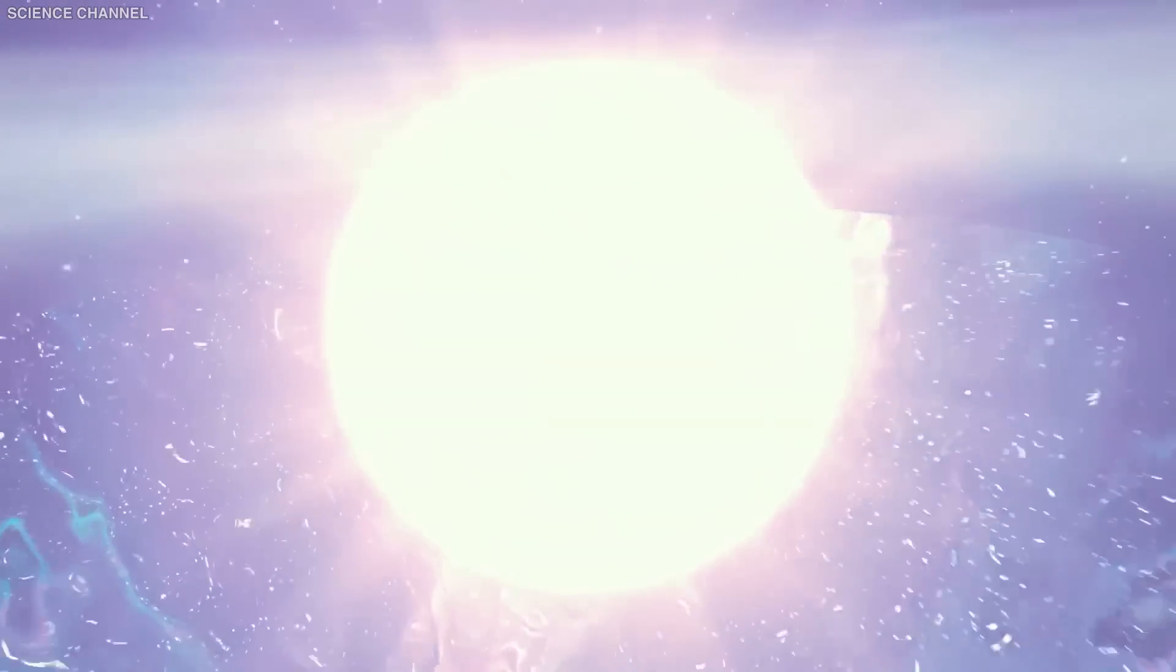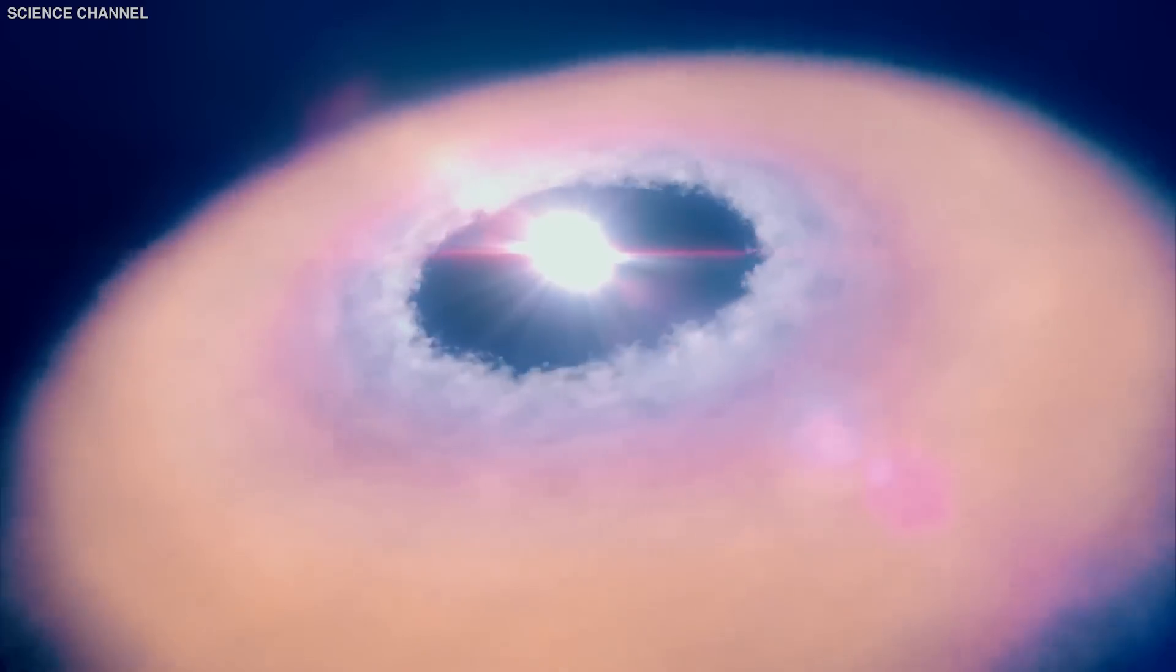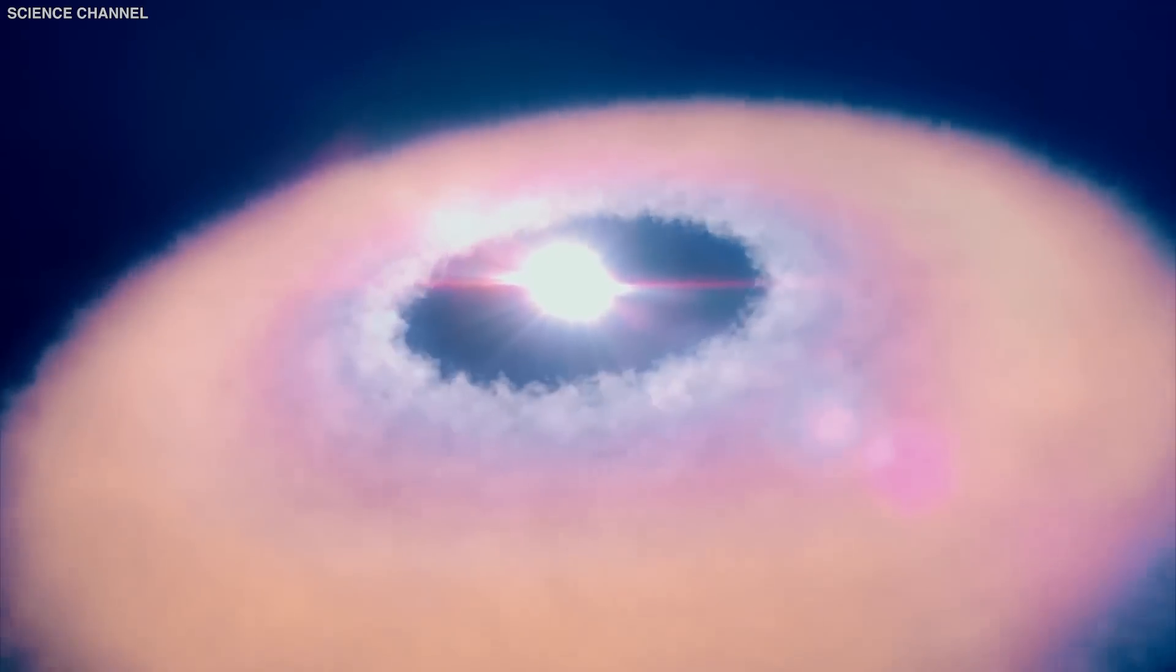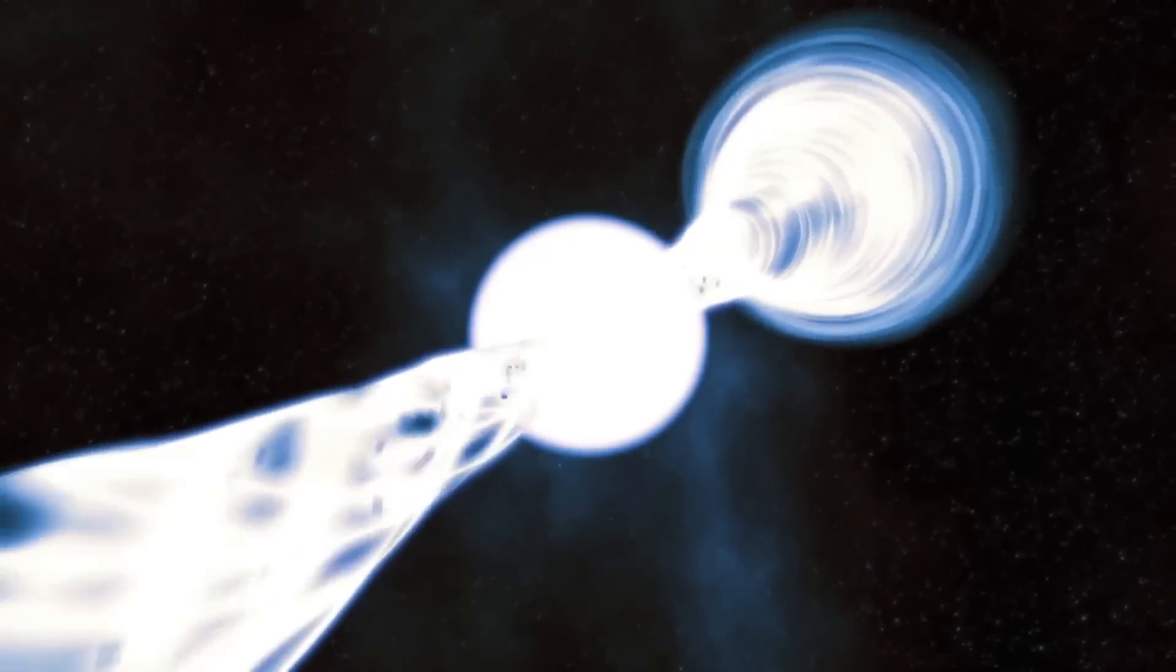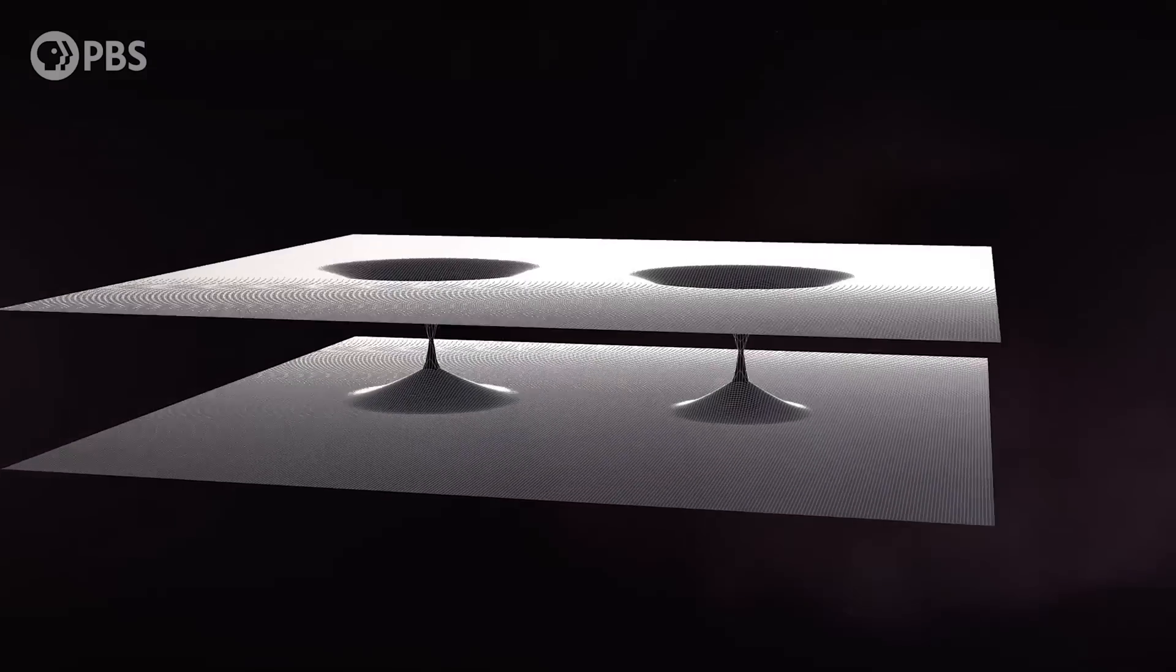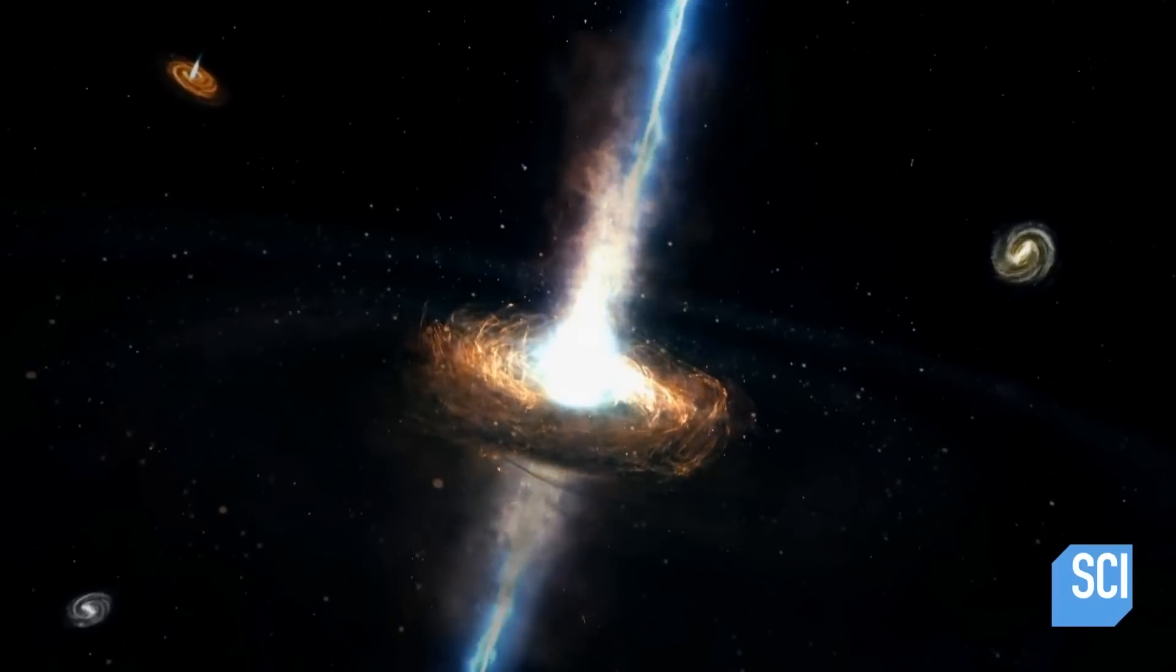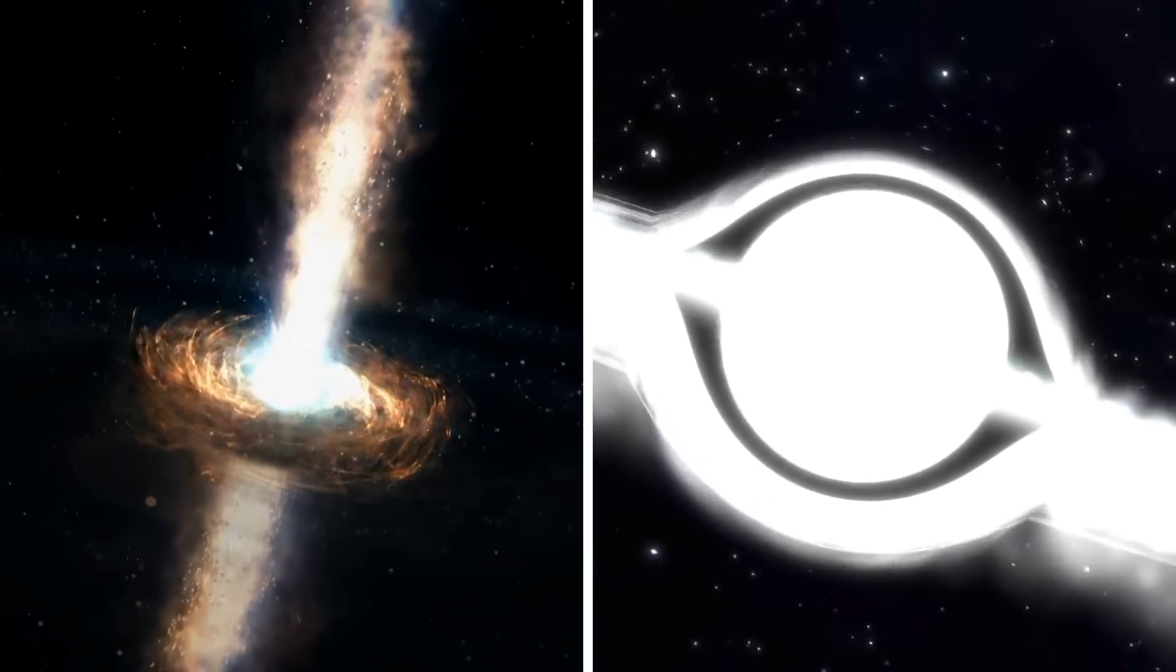These white holes also contain a singularity. However, they act in reverse to a black hole. They don't allow anything to enter their event horizon, and any material inside a white hole gets spitted out immediately. Now, this is where the wormhole comes in. Einstein and Rosen found that for every black hole in space, there is a white hole.